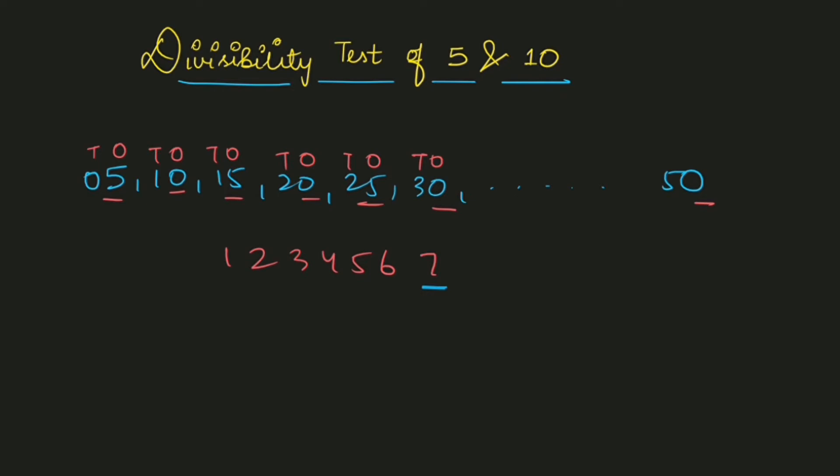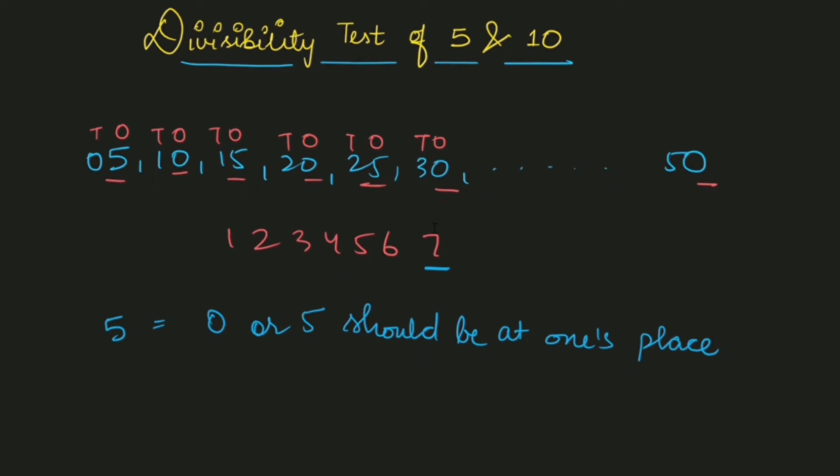The rule says that if the one's place of any number has 0 or 5, then that number can be divided by 5. In the case of 5, 0 or 5 should be at one's place. If 0 or 5 is in the one's place, then that number is divisible by 5. Otherwise, that number cannot be divided by 5.